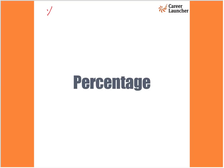Percentage — 'cent' means 100, so 'per cent' means per 100. That means it is equivalent to 1 by 100. So whenever a percent sign is present after any value, for example if it is written 2 percent, it is equivalent to 2 by 100, which simplifies to 1 by 50.